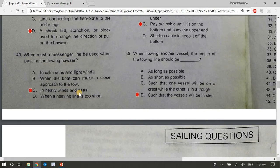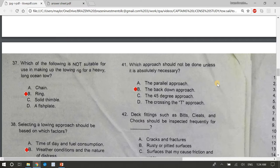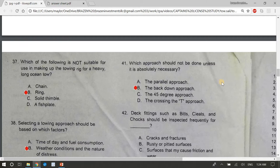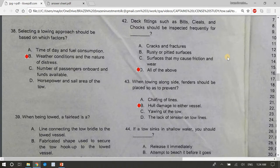40, when must a messenger line be used when passing the towing hawser? The answer is C, in heavy winds and seas. 41, which approach should not be done unless it's absolutely necessary? The answer is B, the back down approach. 42, deck fittings such as bits, cleats, and chalks should be inspected frequently for blank. Cracks and fractures, rusty or pitted surfaces, surfaces that may cause friction and wear. The answer is D, all of the above.